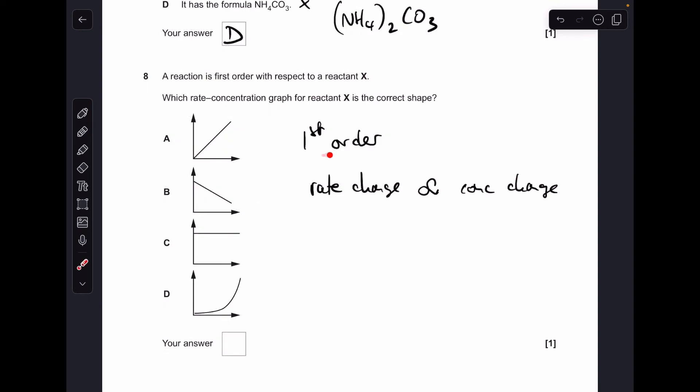Question 8. So a first order reaction is where the rate change is proportional to the concentration change. So which graph shows that? A does.